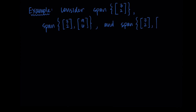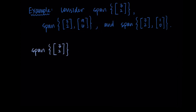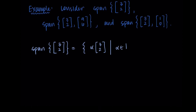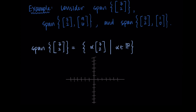Starting with the span of the vector [3,2], this span equals the set of alpha times the vector [3,2], where alpha is a real number. Our linear combinations only have one vector involved, so elements in the span have the form of a scalar alpha times the vector. Graphically, we can plot the vector [3,2] where the x-component is 3 and the y-component is 2 — this corresponds to an alpha value of 1.